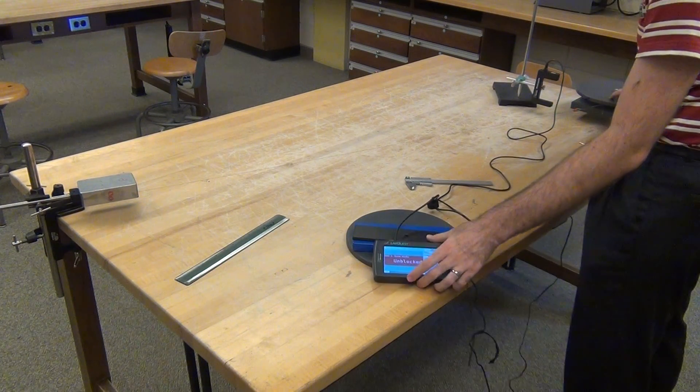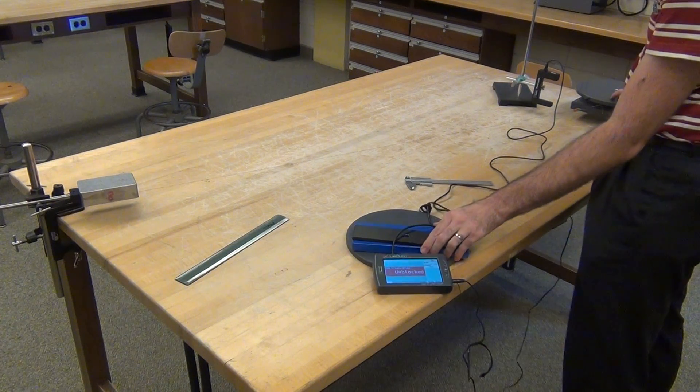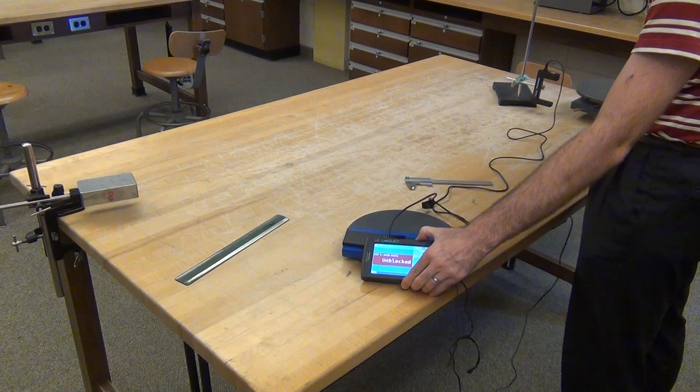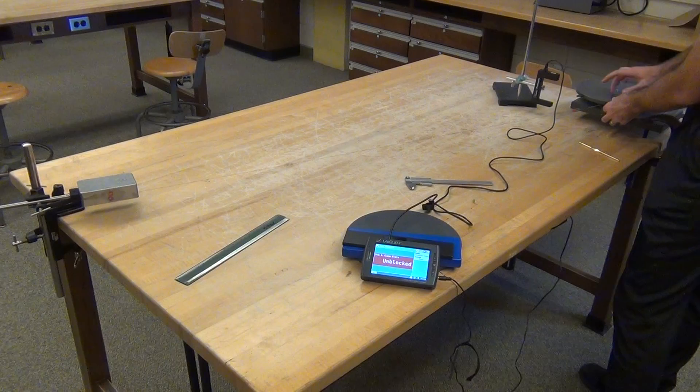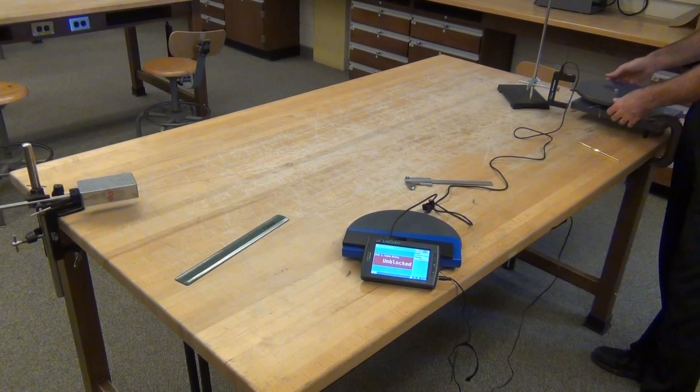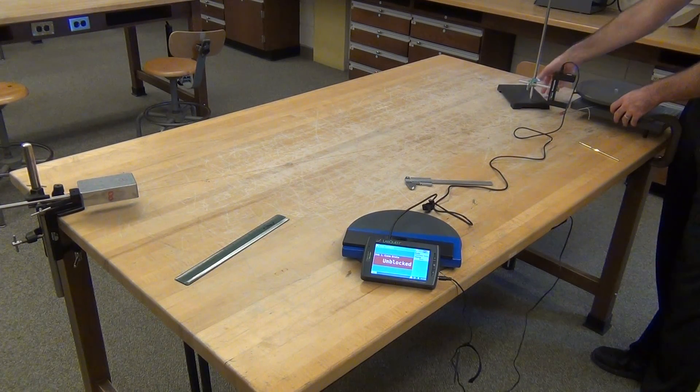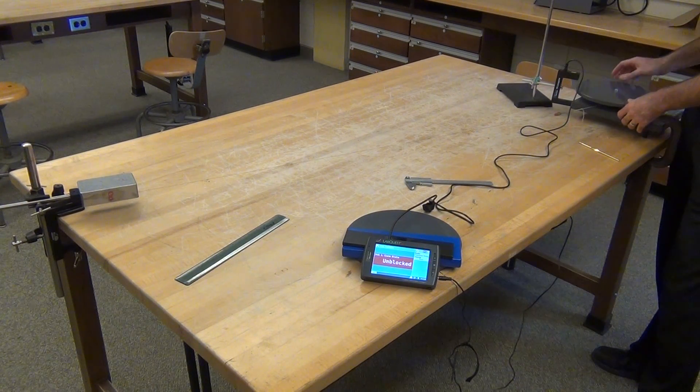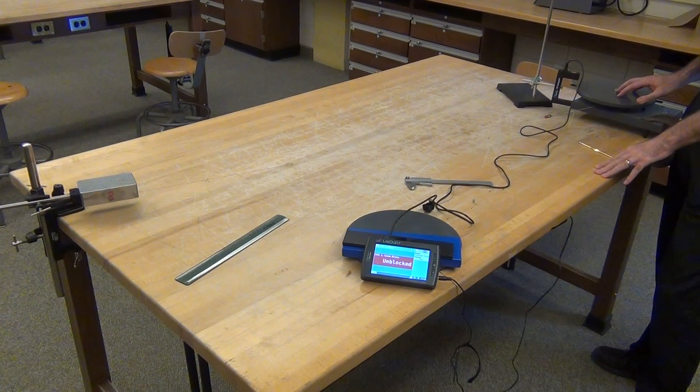Your lab quest, we use to measure when these pegs block the photogate beam. There are two pegs on the disk and they block it every 180 degree rotation, so pi in radians.